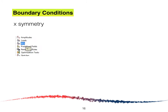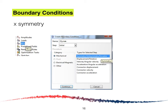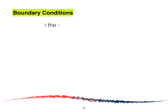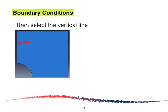The next step is to apply the boundary conditions. Double-click on Boundary Condition and the Create Boundary Condition window will appear. We are going to name it 'X Symmetry', select Symmetry, and click Continue. We are going to select the vertical line only and click Done.